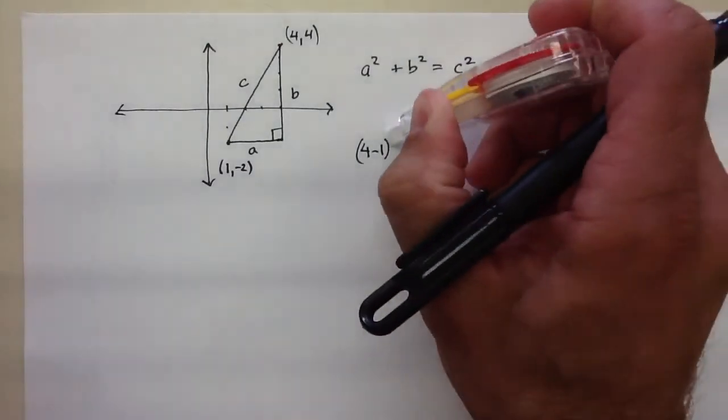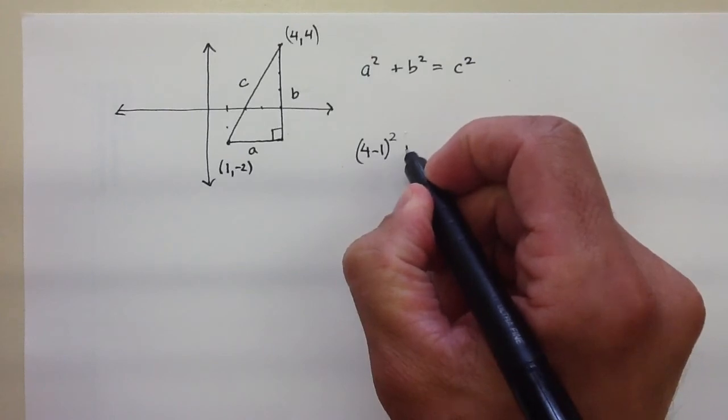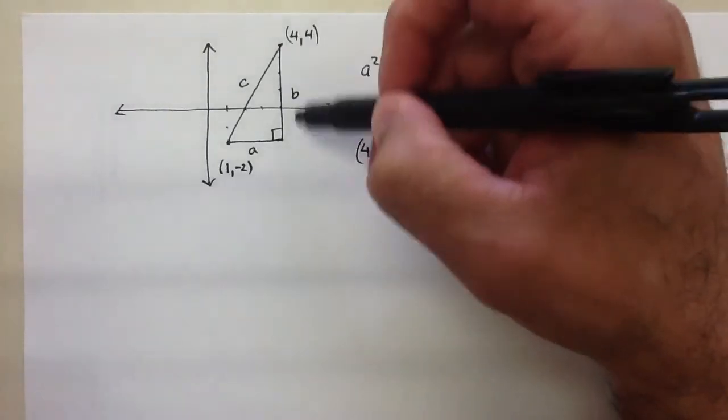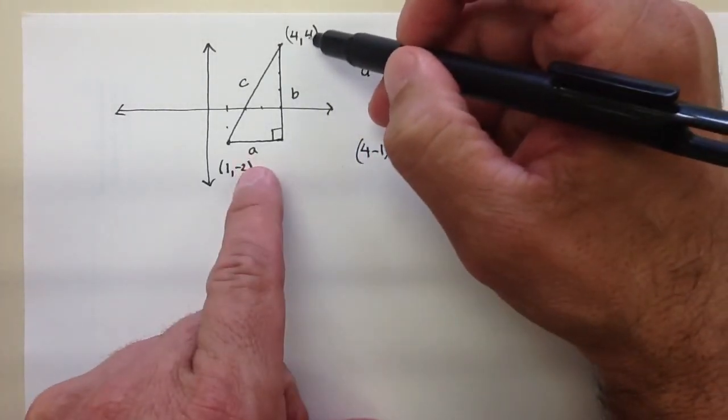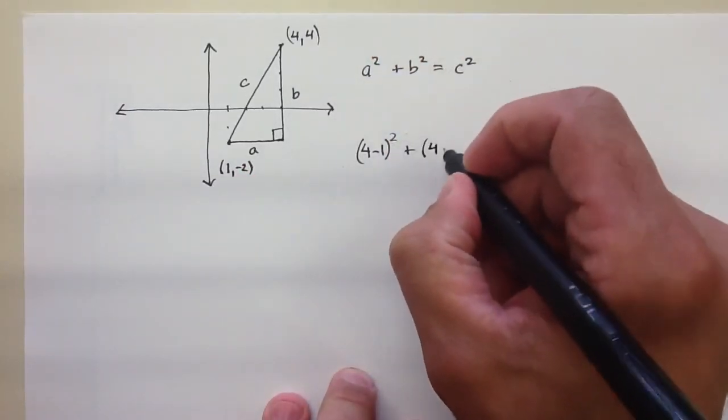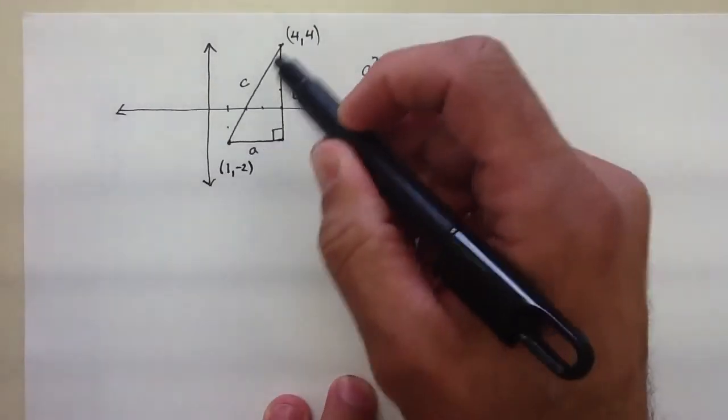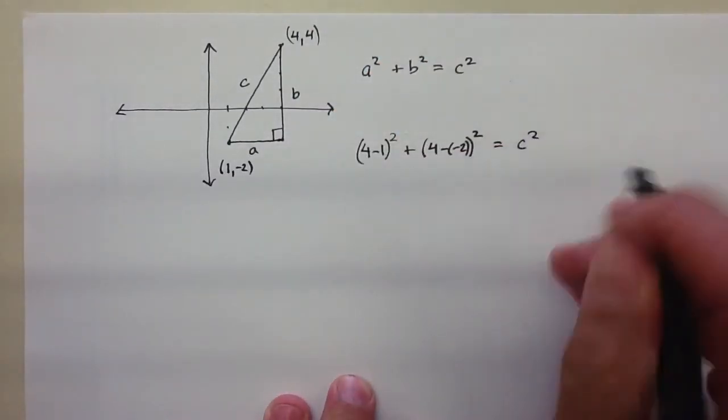And then I would add the b, which is just the difference between what? 4 and negative 2. 4 minus negative 2. And then I squared that, and that should be equal to c squared.